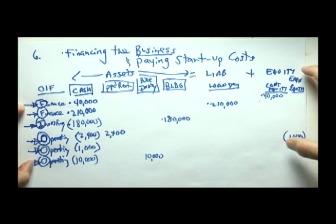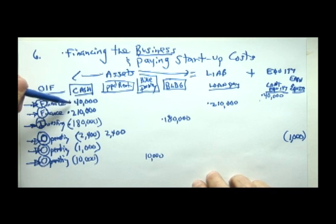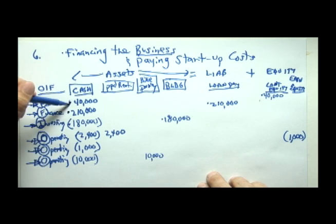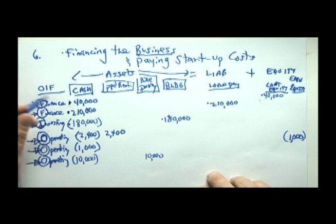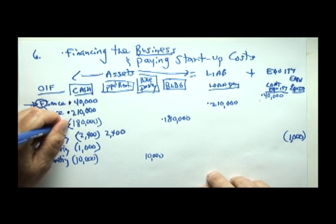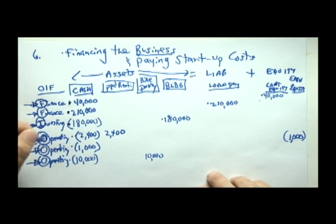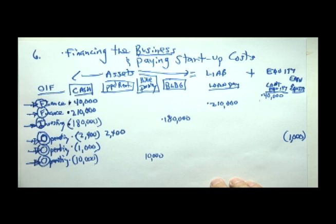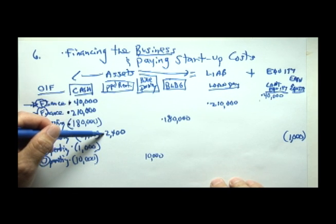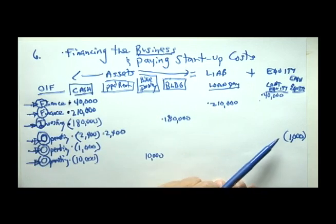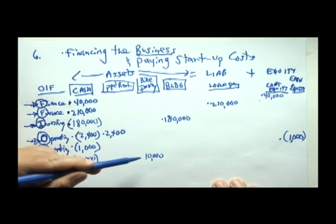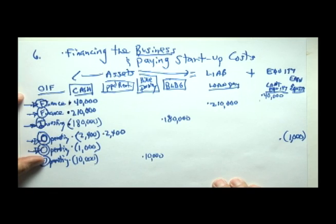To summarize: the owner financed the business with a $40,000 personal investment and a $210,000 bank loan, totaling $250,000 in cash financing. The owner then incurred a $180,000 long-term investing startup cost for the building, plus three short-term operating outflows: prepaid rent, advertising expense, and inventory purchases. This ends video number six — Financing the Business and Incurring Startup Costs.